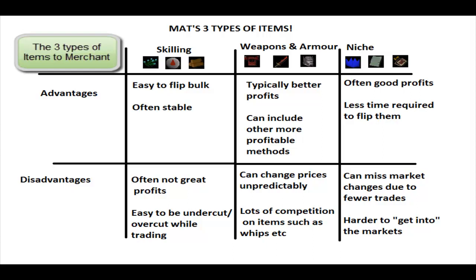Moving on, weapons and armour typically offer better profits than skilling supplies and can include more profitable methods — for example, buying and selling Barrows pieces separately, combining them into sets, or buying Visages and smithing Dragonfire Shields. However, disadvantages include unpredictable price changes. For newer Merchants trying expensive items like Godswords, a 50K change could wipe your profit. There's also lots of competition on commonly Merched items like whips, so you've got to think outside the box.